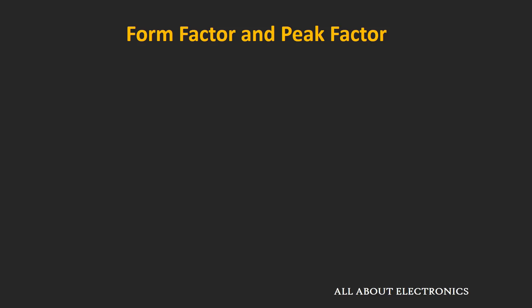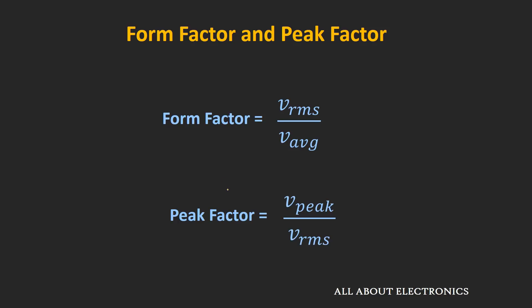Now as we know about RMS and average values, let us see two more definitions: form factor and peak factor. The form factor is the ratio of the RMS value to the average value. The peak factor is the ratio of the peak value of the signal to the RMS value. So I hope in this video you understood what is RMS and the average value for the AC signal or any time varying signal, and what is form factor and peak factor.